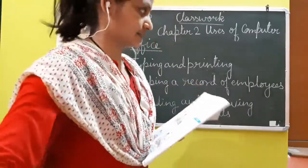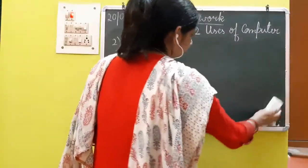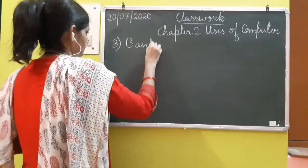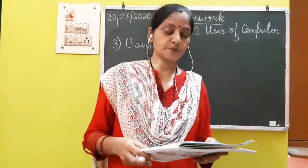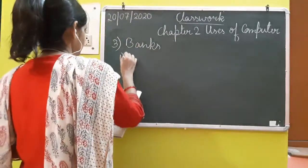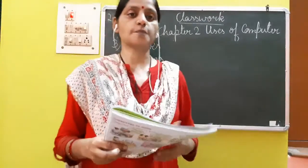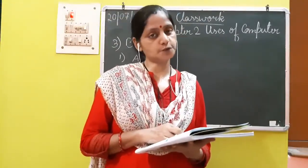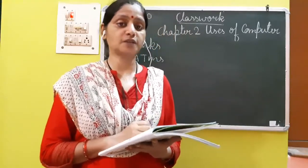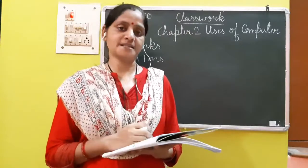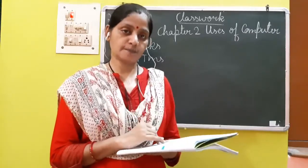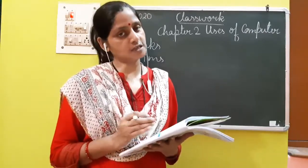Now banks. We have computers in banks also. Computers are used in banks for withdrawing money from an ATM. ATM is one type of computer which is operated by the computer, and people use ATMs to withdraw money. We don't have to stand in long lines at the bank — at the ATM we can remove money in 2-5 minutes. Then keeping the record of money — how many people have deposited and how many have withdrawn.